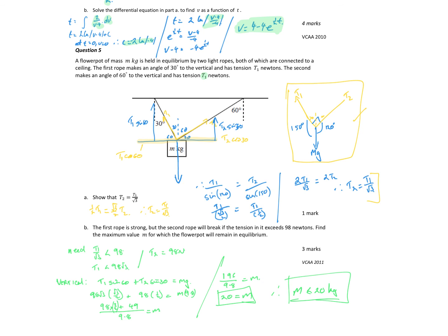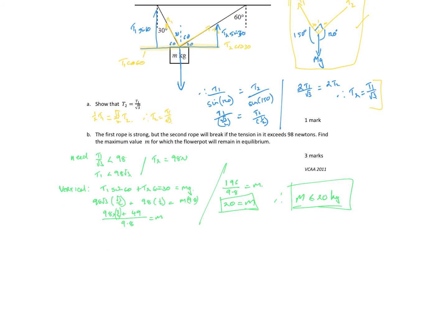The first rope is strong but the second rope will break if the tension in it exceeds 98 newtons. Find the maximum value of m for which the flower pot will remain in equilibrium. The second part says the second rope will break if the tension in it exceeds 98 newtons. So T2 has to be equal to or less than 98, and that implies given T2 equals T1 over root 3, T1 has to be less than 98 root 3 newtons. Resolving vertically, I get my T1 sin 60 on the left hand side plus T2 sin 30 on the right hand side has to be less than mg acting vertically down. If we substitute those values in, 98 root 3 times root 3 over 2 plus 98 times a half equals mg.